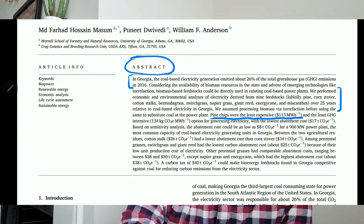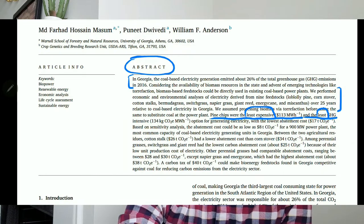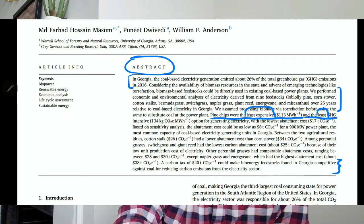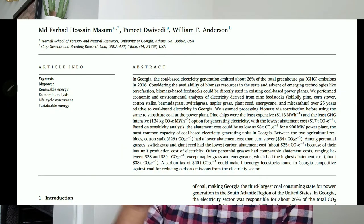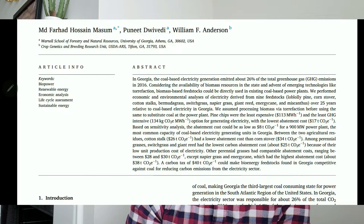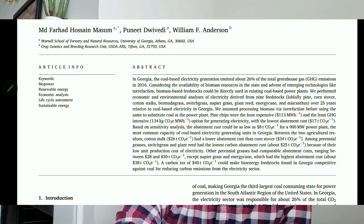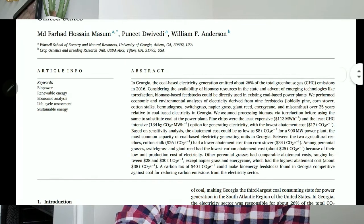In the abstract you also present your major results. In my paper, for example, the major finding was that one option is less expensive and emits less carbon dioxide than the others. Then you give a recommendation based on your results. Ironically, the abstract is the last thing we write — because you can't summarize sections you haven't written yet.